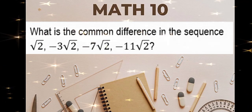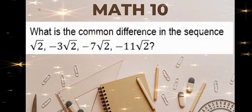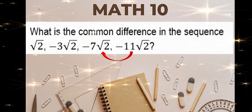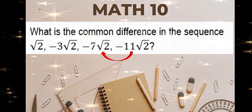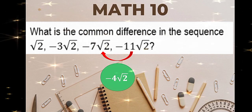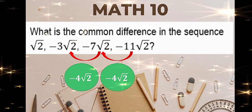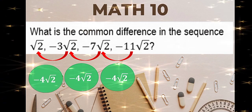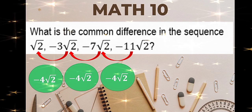What is the common difference in the sequence √2, -3√2, -7√2, and -11√2? To find the common difference of your arithmetic sequence, we need to subtract the last term by the previous term. So -11√2 minus -7√2 is -4√2. Then -7√2 minus -3√2 is -4√2 also. And -3√2 minus √2 is also -4√2. The common difference is -4√2.